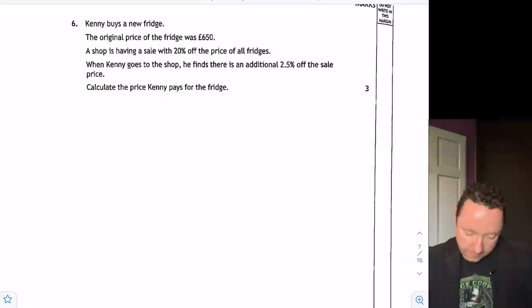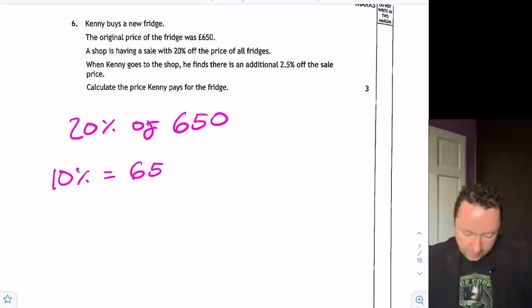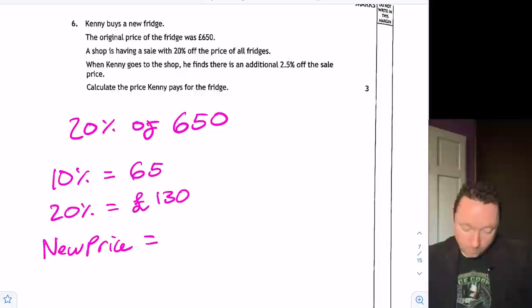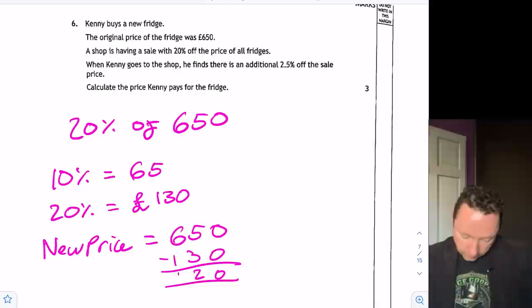Let's do 20% then. So 20% off £650. Well the easiest way to do that is find 10% by dividing by 10, so that's £65. Then double it up to 20% to get £130. So we now know we're getting £130 off. So the new price before we get the additional bit is £650 minus that £130. That gives me £520, which is the sale price.